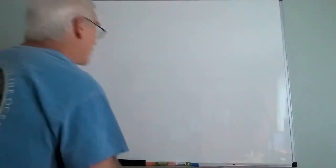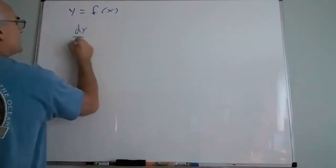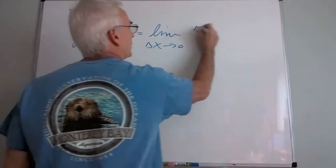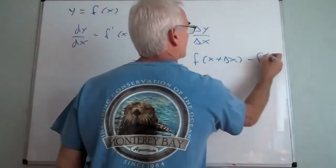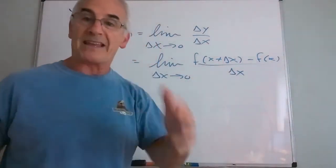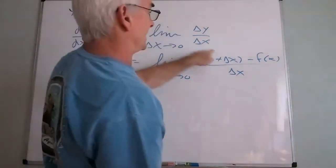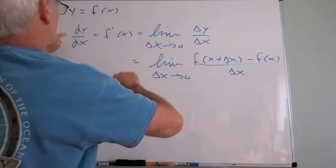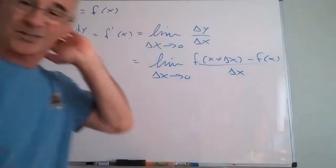Let me review the definition of the derivative. If y equals f of x, then dy/dx, which also equals f′(x), is equal to the limit as Δx approaches zero of Δy over Δx, or [f(x+Δx) − f(x)] / Δx. These statements say exactly the same thing. The d refers to differential; delta is the actual change. Both of these are the derivative — dy/dx equals f′(x).